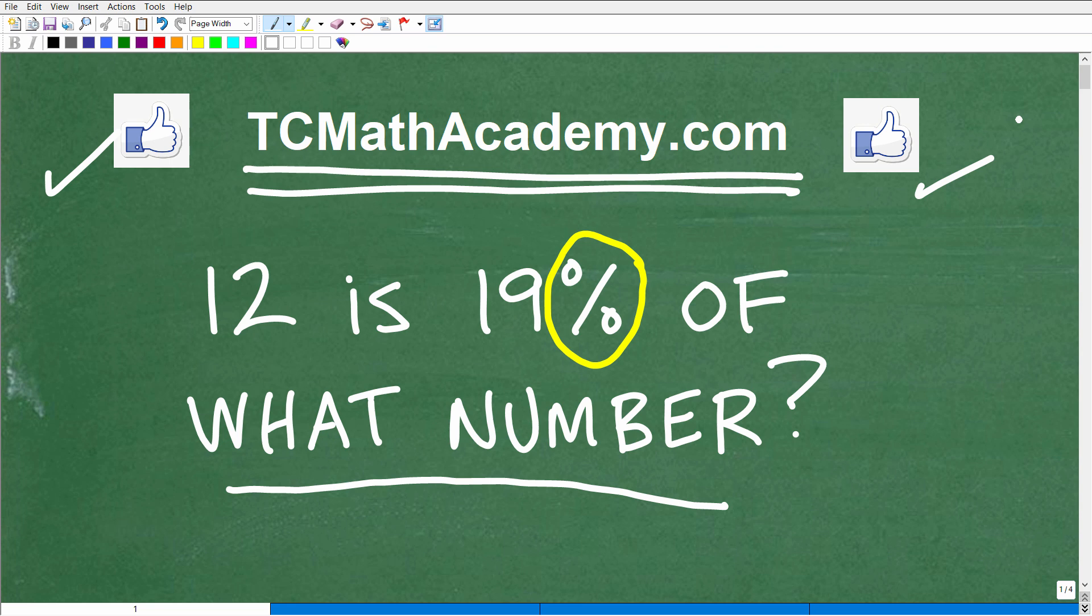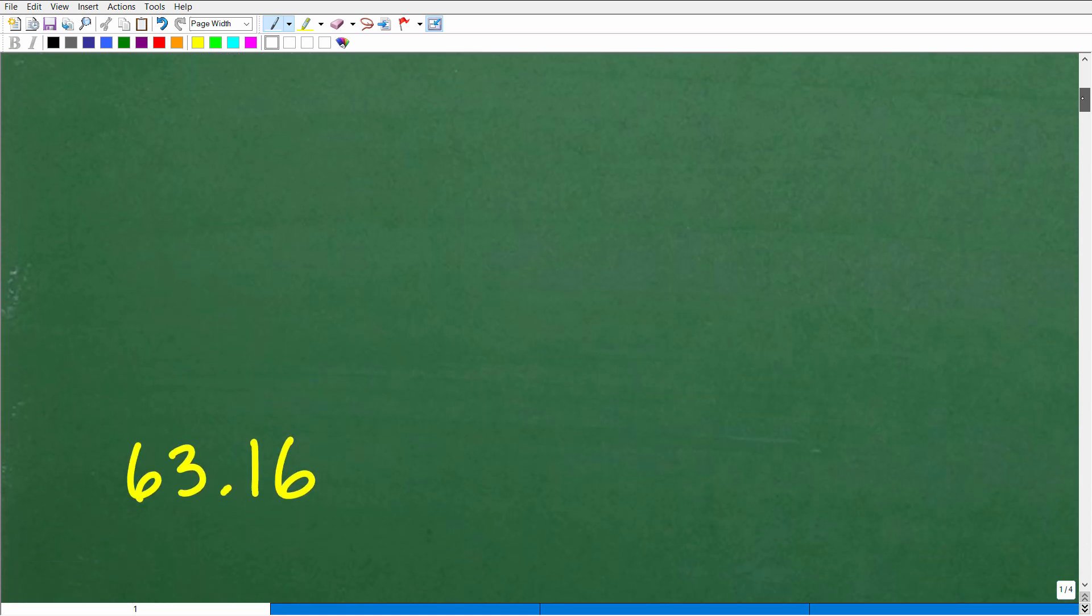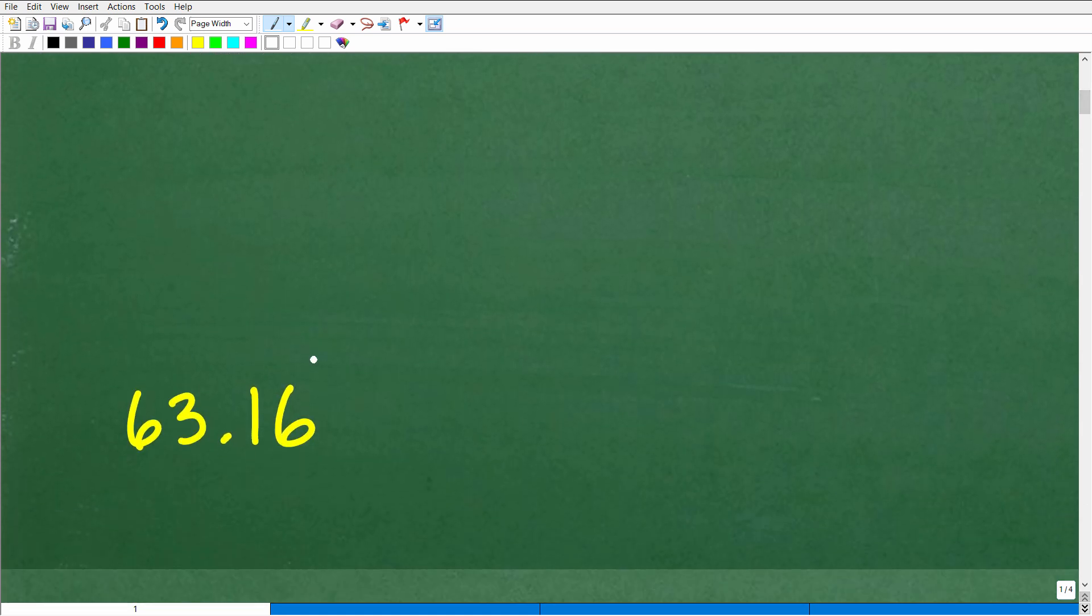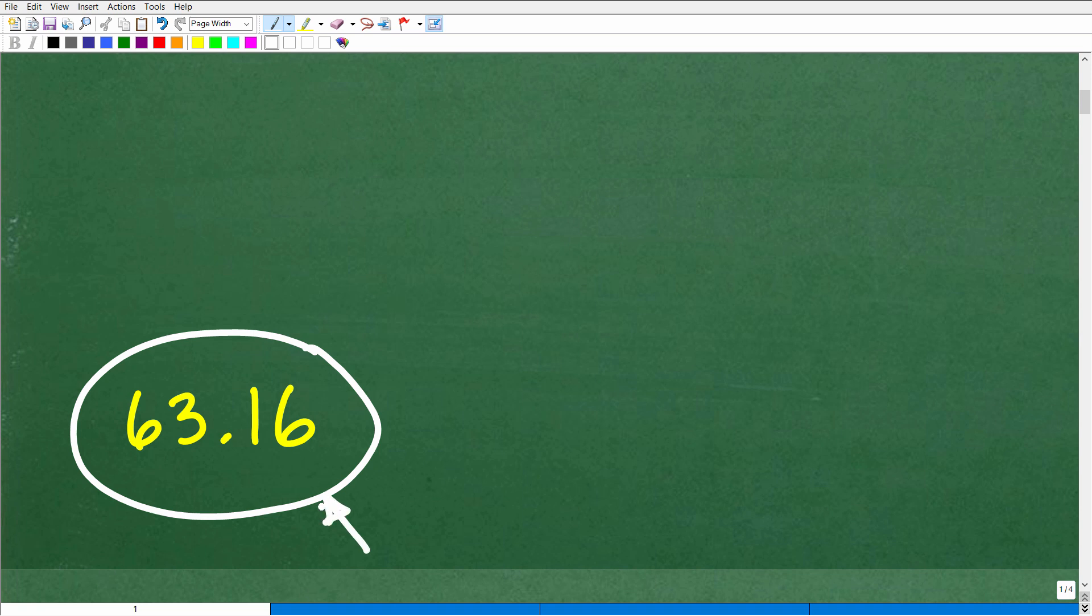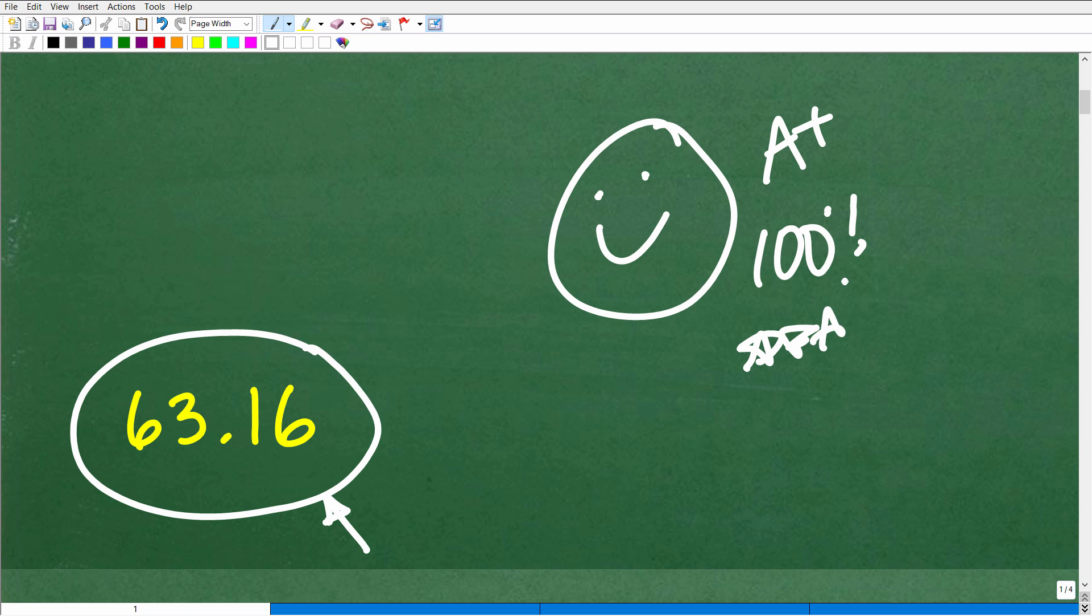So, 12 is 19% of what number? What is that number? Well, that number is approximately 63.16. So we'll just kind of round it off here. If you've got 63.15, something in this kind of neck of the woods, then you did this correct. And you definitely deserve, in my book, a nice little happy face, an A+, a 100%, and a few stars. So you can tell your friends and family that you know a thing or two about percent.